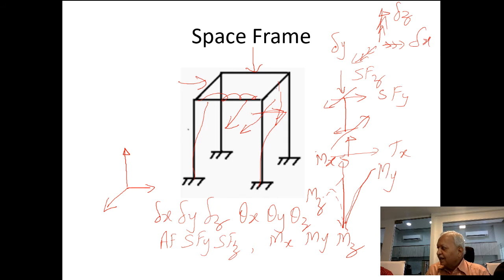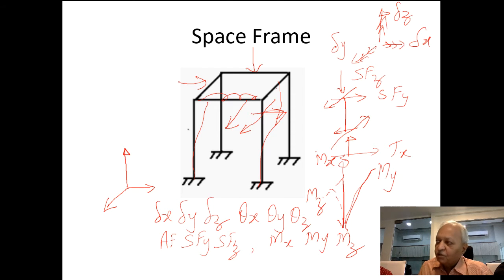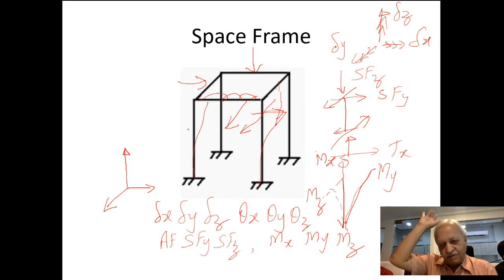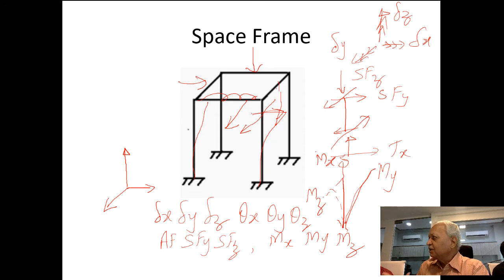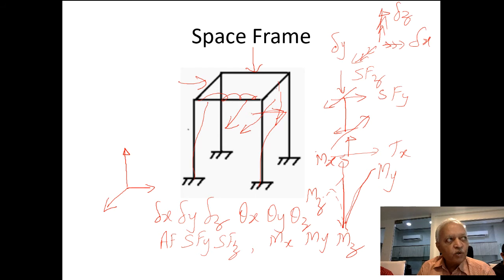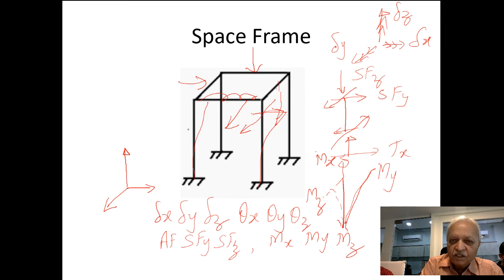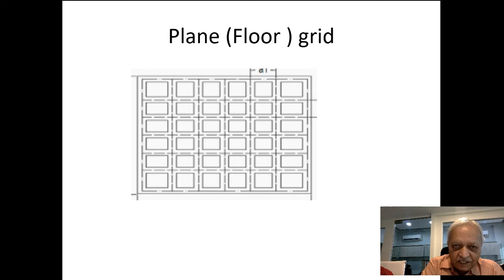The reason we classify forces differently — distinguishing torsional moment from normal bending moment, and shear from axial force — is that the design approach differs for each. Torsional moment and bending moment develop different types of stresses. Similarly, material properties differ for tension versus compression, and the way shear stress develops is different from axial stress. This classification ensures proper stress identification at the design stage.